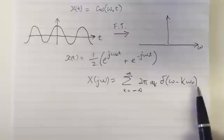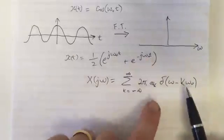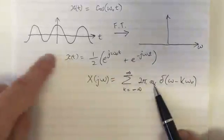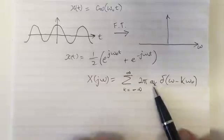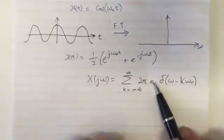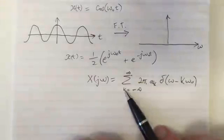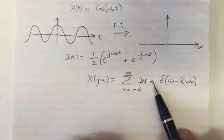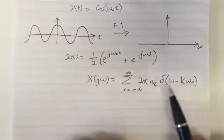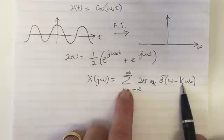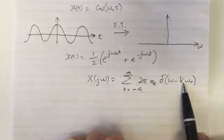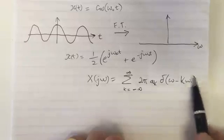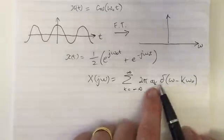In this case, ω₀ is defined here, and we can see clearly that in x(t) we only have these two coefficients for the series, so there are only two values in this summation. All the other values of a_k equal zero.